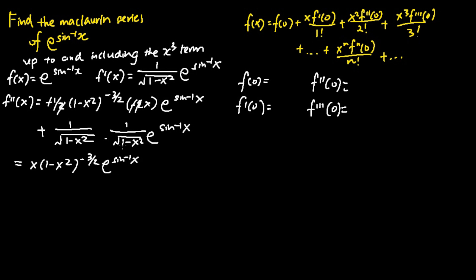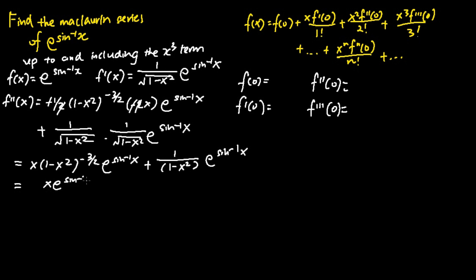For the second term, I keep 1 over square root of 1 minus x squared and differentiate e to the power of sine inverse x, which gives 1 over square root of 1 minus x squared times e to the power of sine inverse x. So 1 over square root of 1 minus x squared multiplied by 1 over square root of 1 minus x squared simplifies to 1 over (1 minus x squared), times e to the power of sine inverse x.